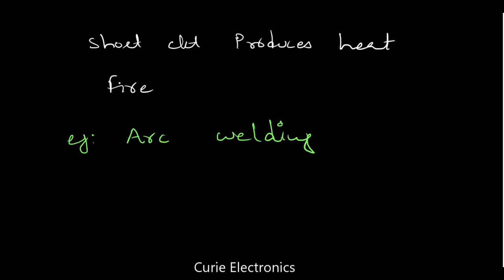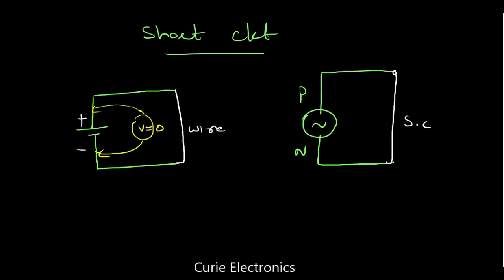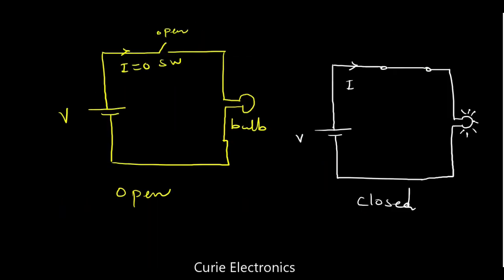In arc welding, the current source provides a large amount of current, and we make use of this short-circuit principle. So this is the basic idea to understand what is a short-circuit.